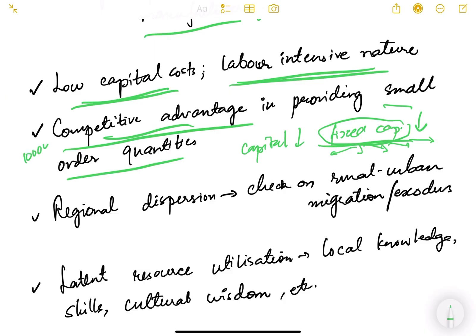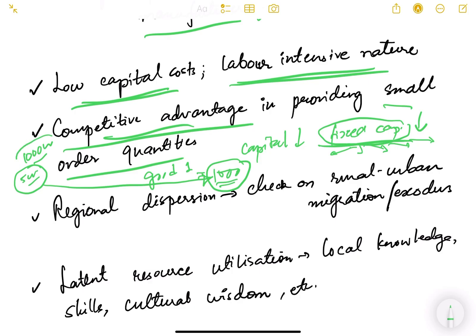To illustrate: if a large industry has a fixed capital investment of 1000 crore and a small MSME has only 5 crore, and both produce 1000 units per annum, the fixed cost per unit is much lower for the MSME. This means large industries do not have a competitive advantage in taking small order quantities, whereas MSMEs do.